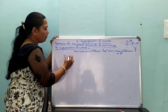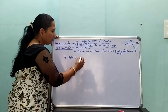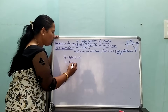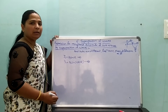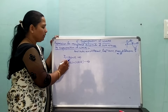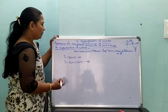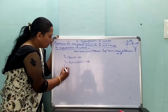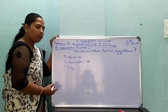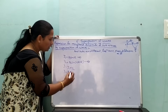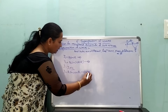Consider two waveforms. The first is y1 = A1 sin(ωt), and the second waveform is y2 = A2 sin(ωt + φ). According to the superposition principle, y = y1 + y2. Therefore y = A1 sin(ωt) + A2 sin(ωt + φ).